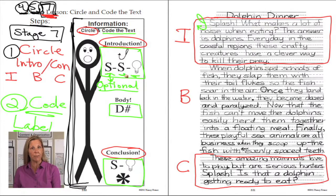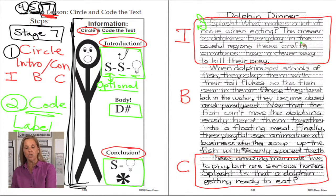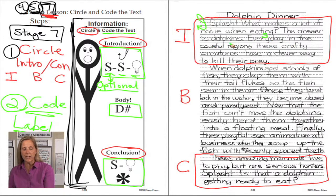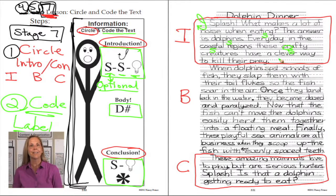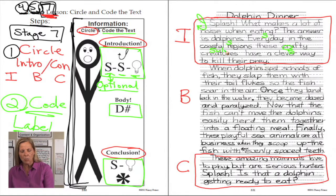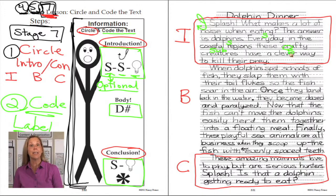But the subject — who or what is the information about — and what's the big idea, why is it so important, that needs to be in the paper. Every day — we have a setting. In the coastal regions — another S for setting. These crafty creatures — there's our subject — have a clever way to kill their prey — there is my light bulb for the big idea. Sometimes students may get the S's mixed up, so you may want to put S-U-B when it's the subject. Setting, setting, subject — light bulb is the big idea. We have all those parts in place, so I know in my introduction I have a hook, setting, subject, and the big idea of my paper.